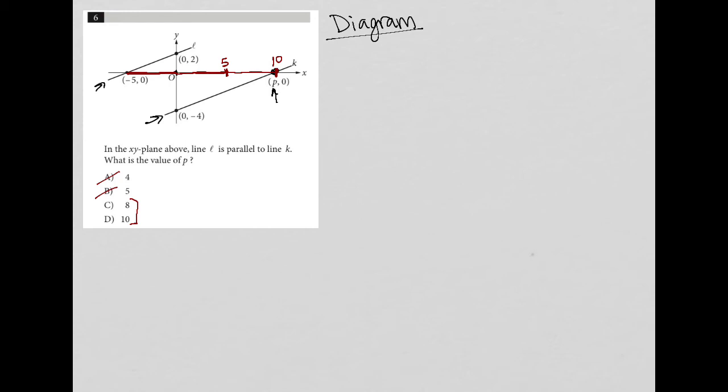The key to answering this question mathematically, however, is in the word parallel. Whenever you have two parallel lines, you're going to have lines that have equal slope.